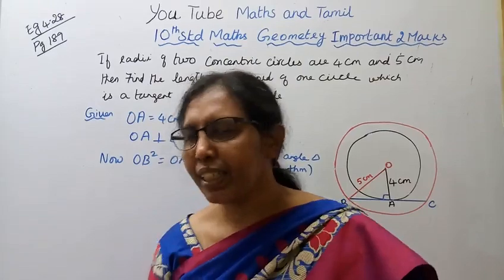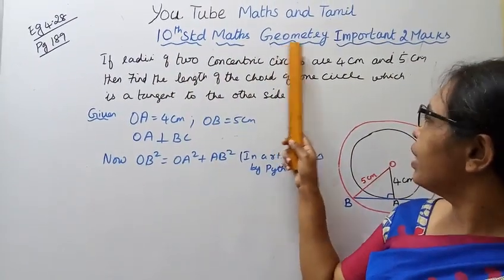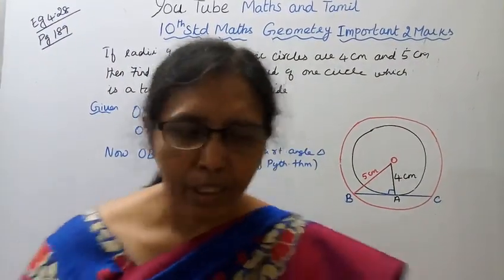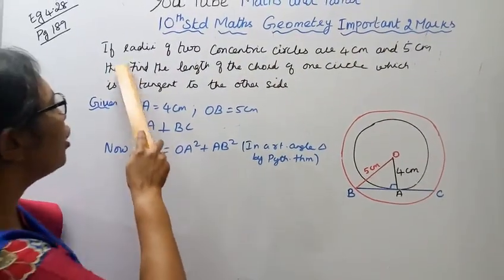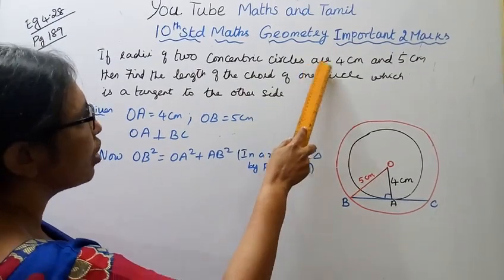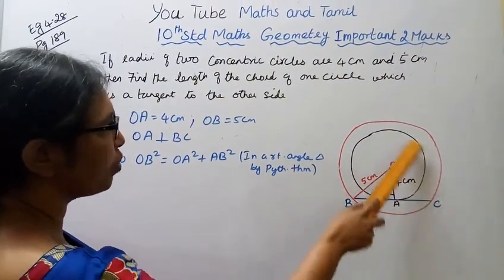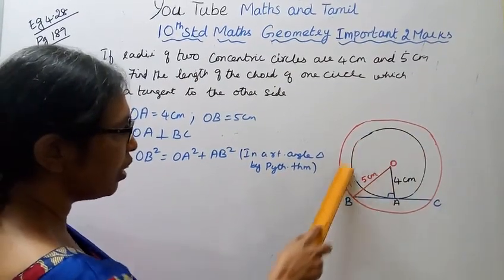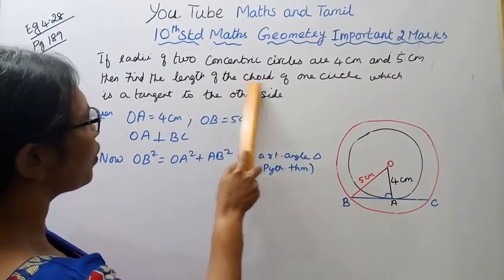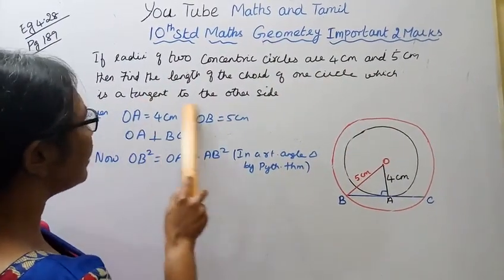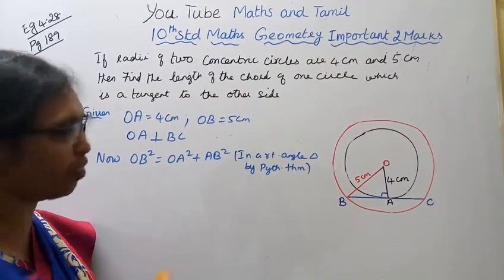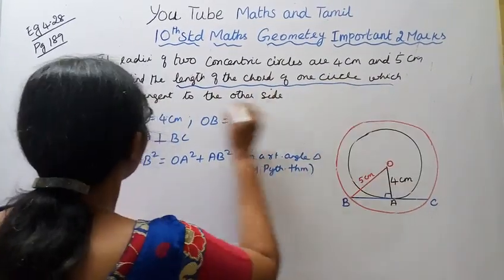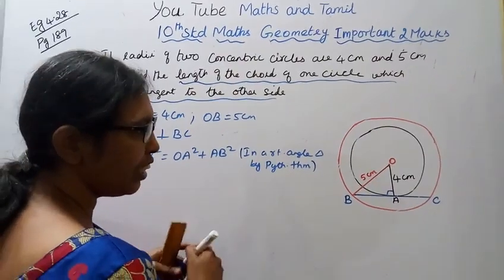Hello students, welcome to Max Tamil channel. 10th standard Maths Geometry important two marks, Example 4.28, page 189. If radii of two concentric circles are four centimeters and five centimeters, find the length of the chord of one circle which is a tangent to the other circle.